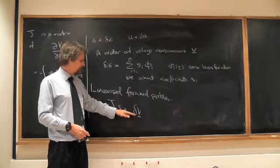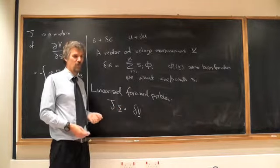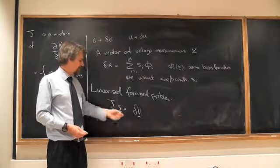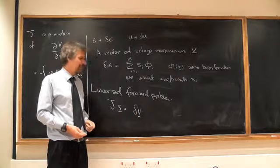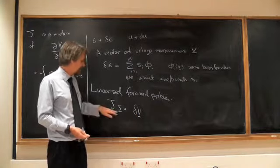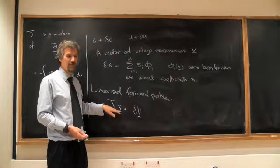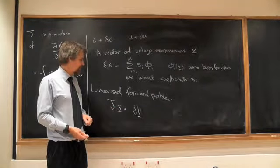It turns out that, first of all, this matrix, no reason to particularly assume it's square. This matrix is - this vector is number of electrodes squared, roughly, having some redundancy. But this is just however many adjustable conductivities we put in our model, which we can choose.